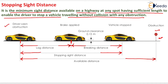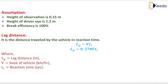The minimum height of obstruction should be at least 0.15 meter and the height of the driver's eye is at least 1.2 meter above the pavement. We need to find the lag distance and braking distance so that we can compute the stopping sight distance. The assumptions taken during the derivation are: height of obstruction is 0.15 meter, height of driver's eye is 1.2 meter, and the brake efficiency is 100 percent.